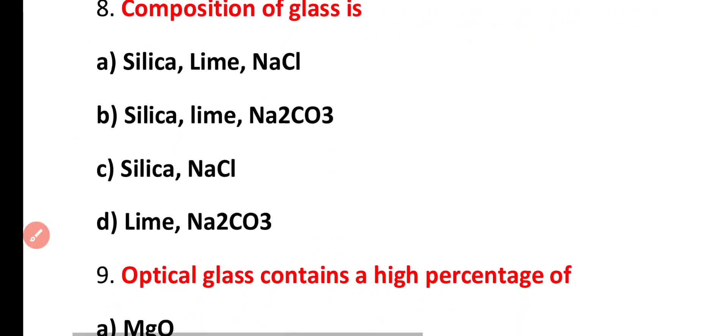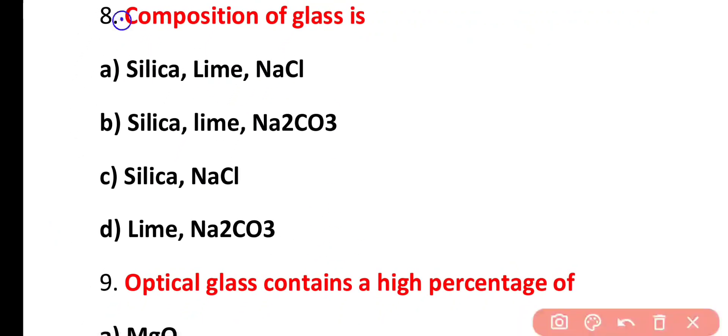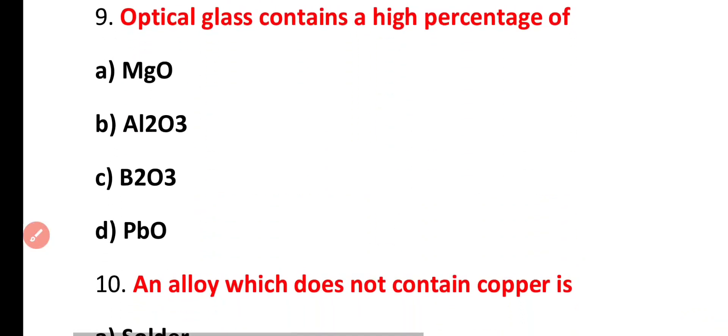Question number 8. Composition of glass is silica, lime and sodium chloride, silica, lime and sodium carbonate, silica and sodium chloride, lime and sodium carbonate. Correct answer is option B. Glass is a mixture of silica, lime and sodium carbonate.